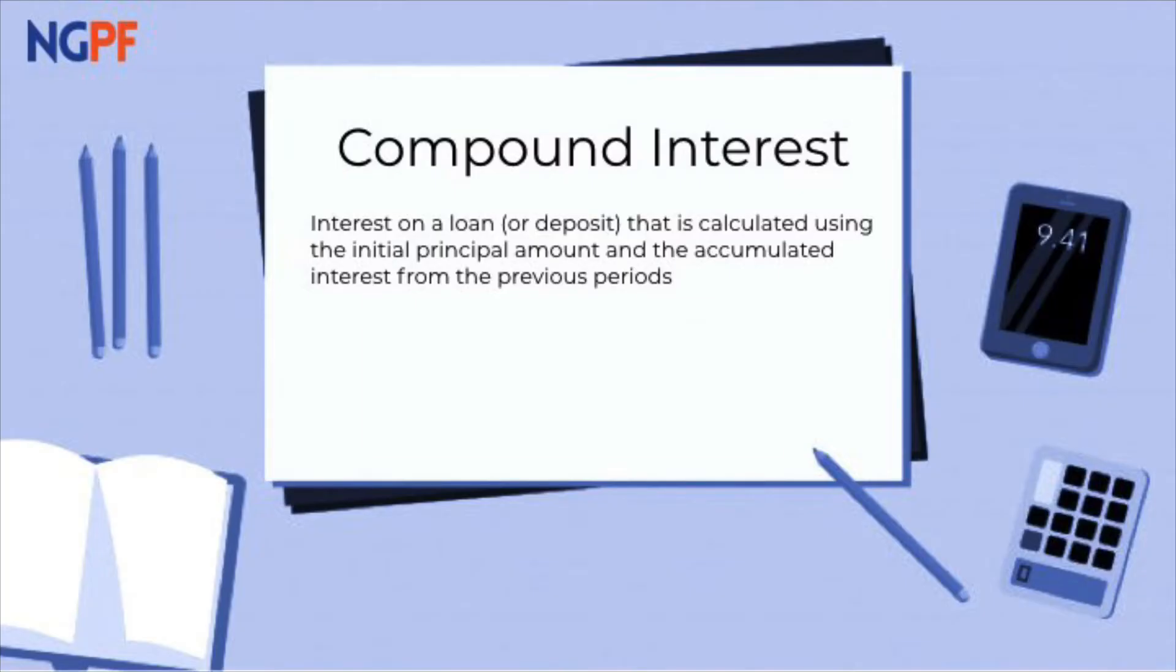Let's go over the compound interest formula and what each variable stands for. We have A equals P times 1 plus R divided by N, all raised to the N times T power.